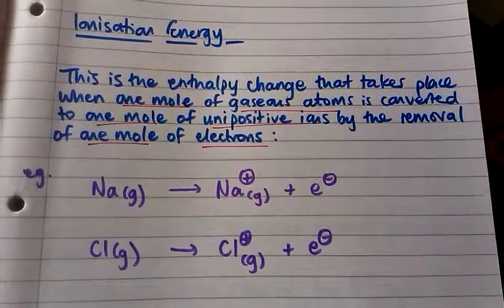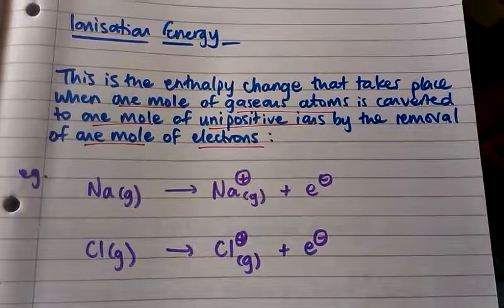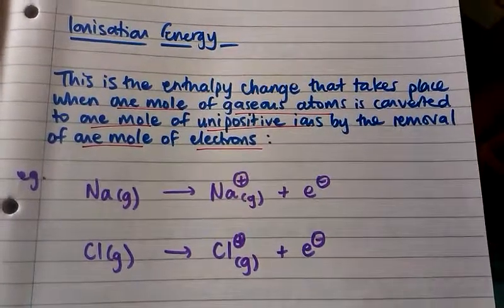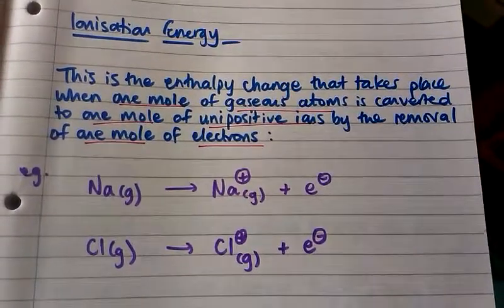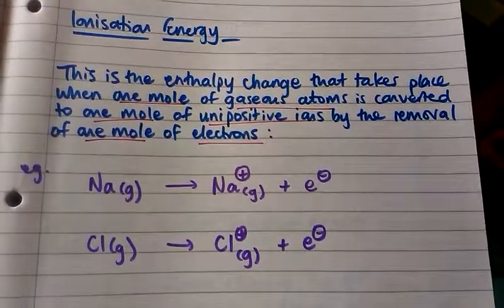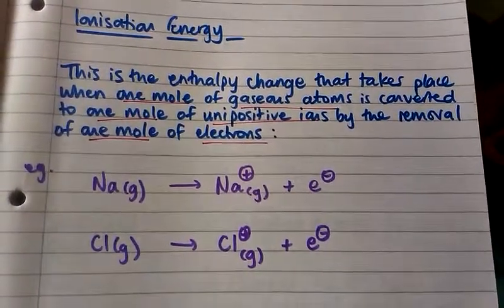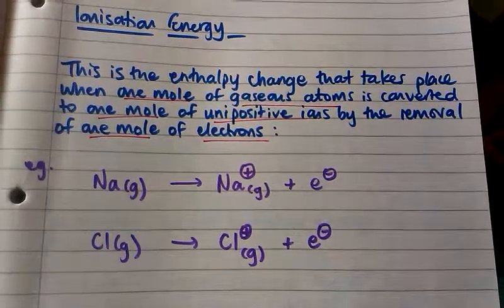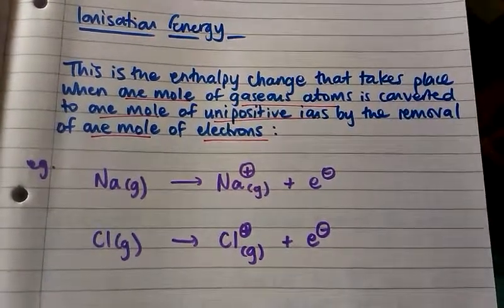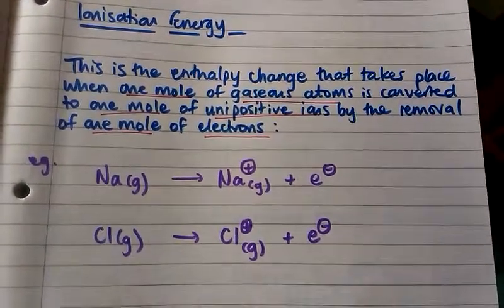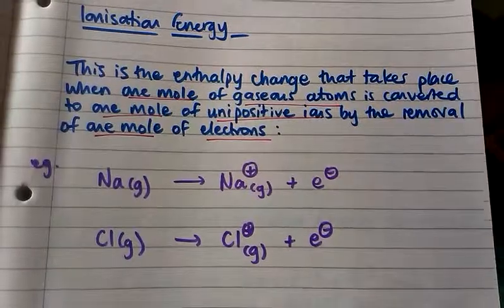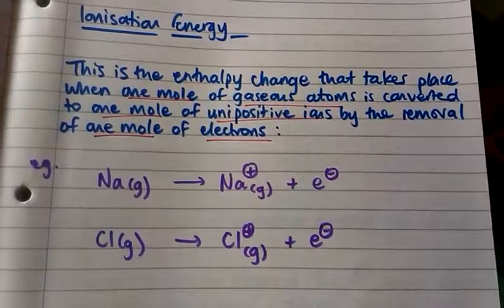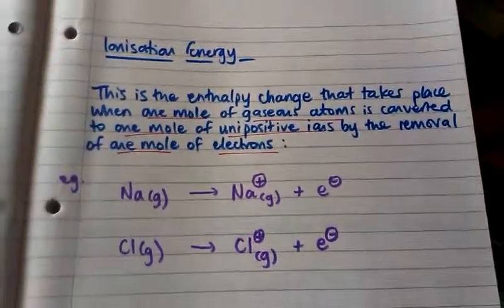And again with chlorine — one mole of gaseous chlorine atoms being converted to one mole of gaseous chlorine plus ions by the removal of one mole of electrons.